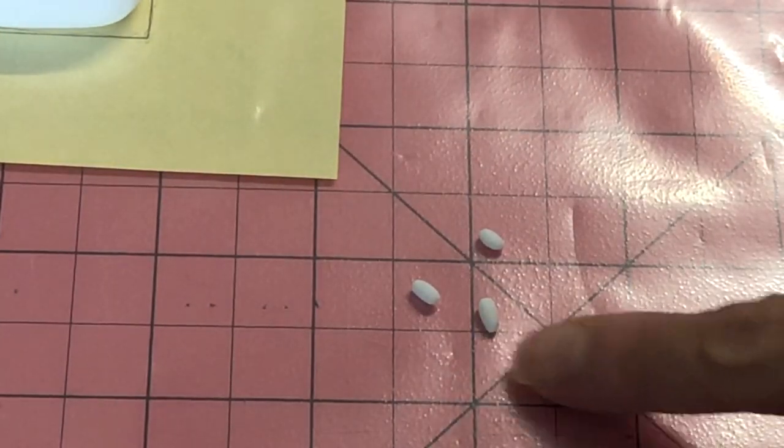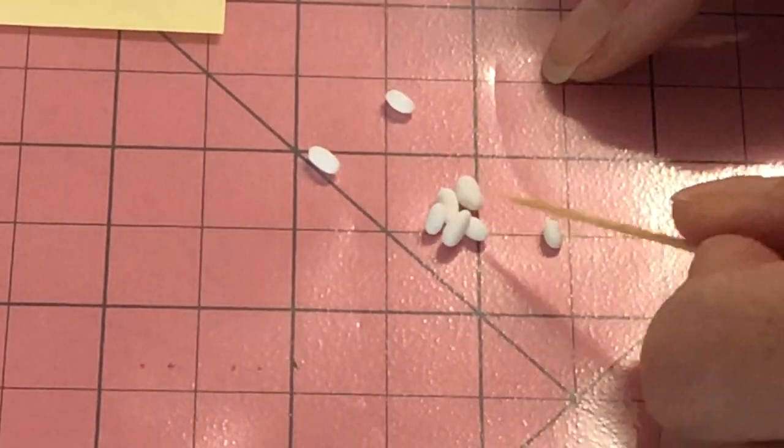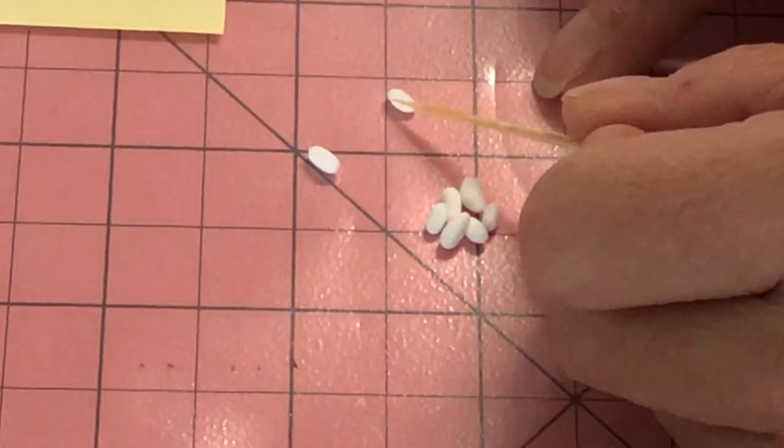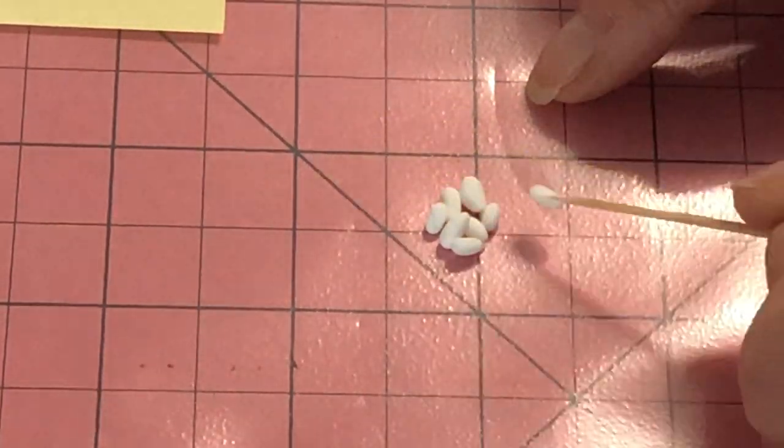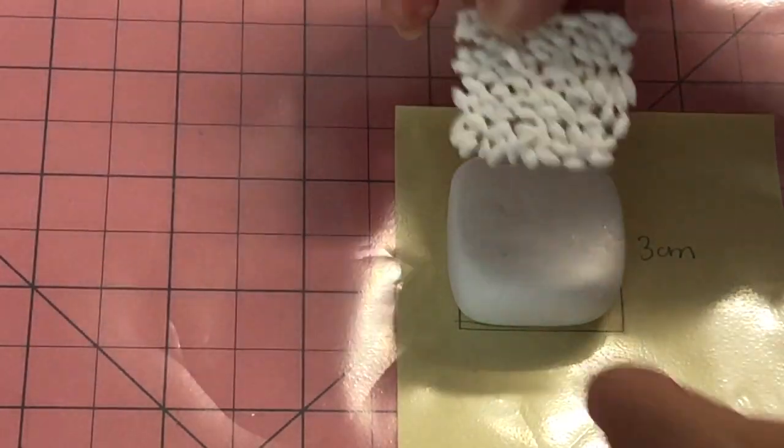For the individual grains of rice take tiny pinches of white clay and roll it on your surface to make an oblong shape. While the clay is tacky, start clumping the grains of rice together to make a square big enough to cover the block we made earlier.